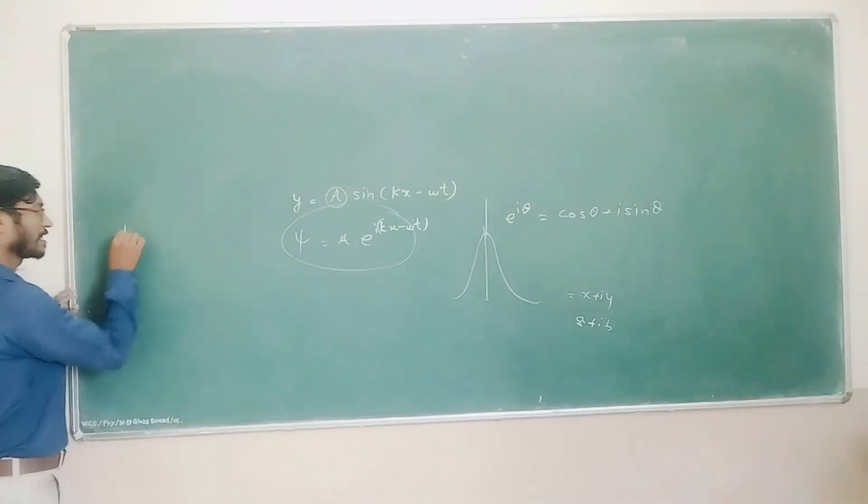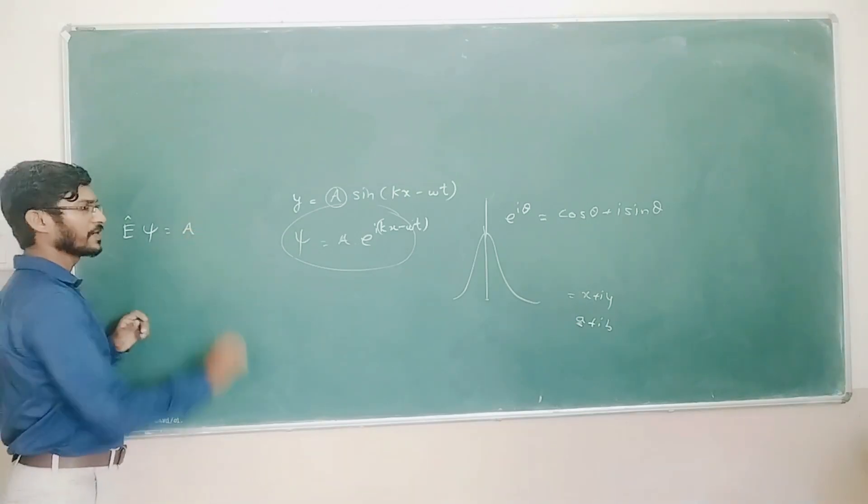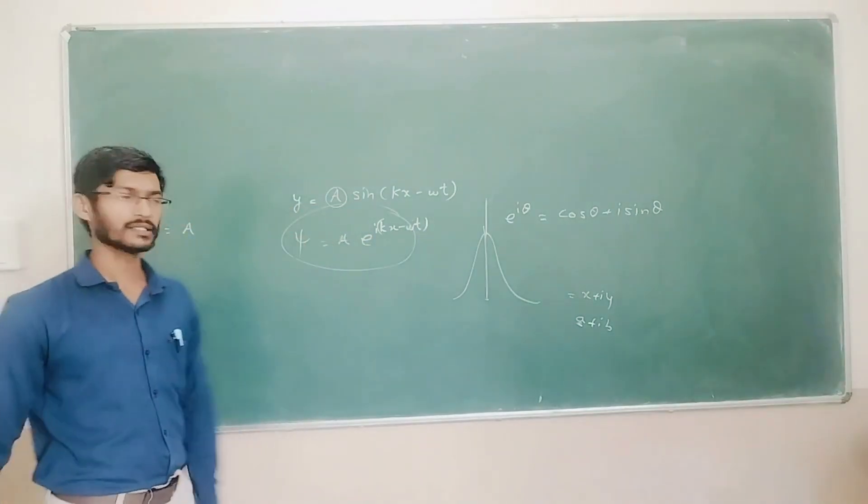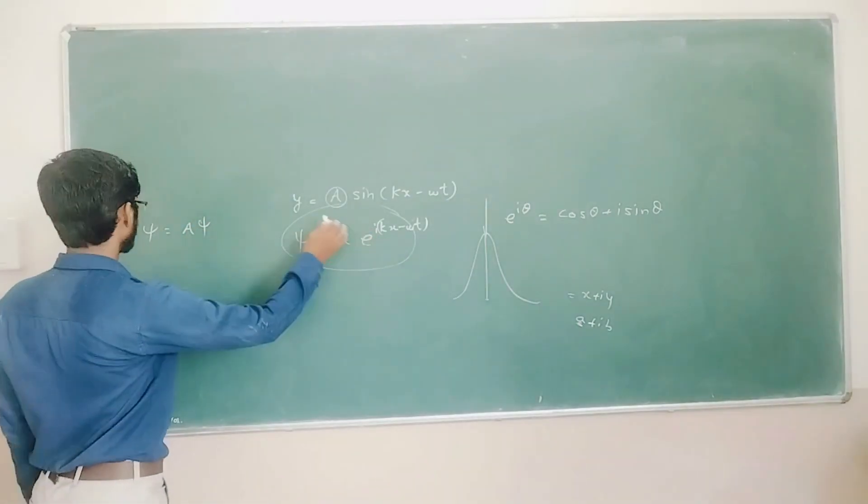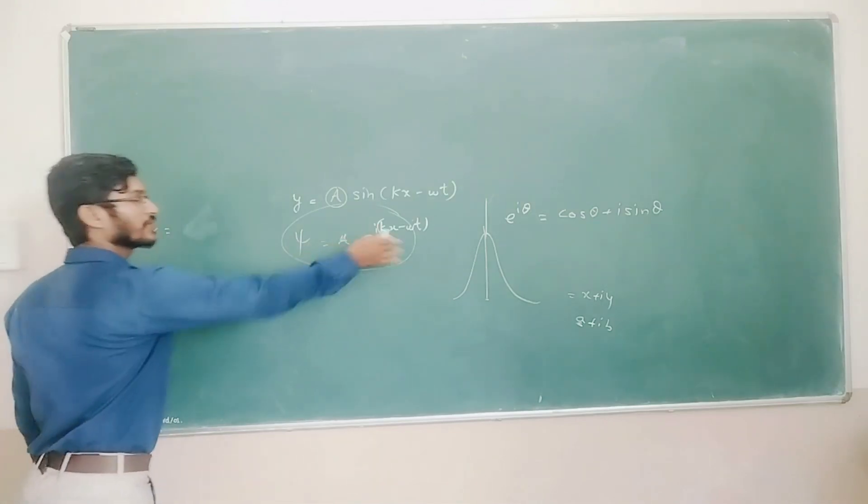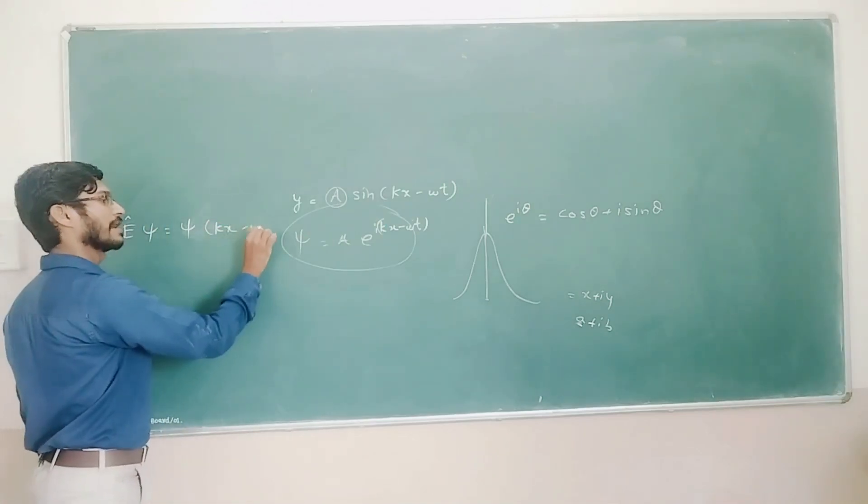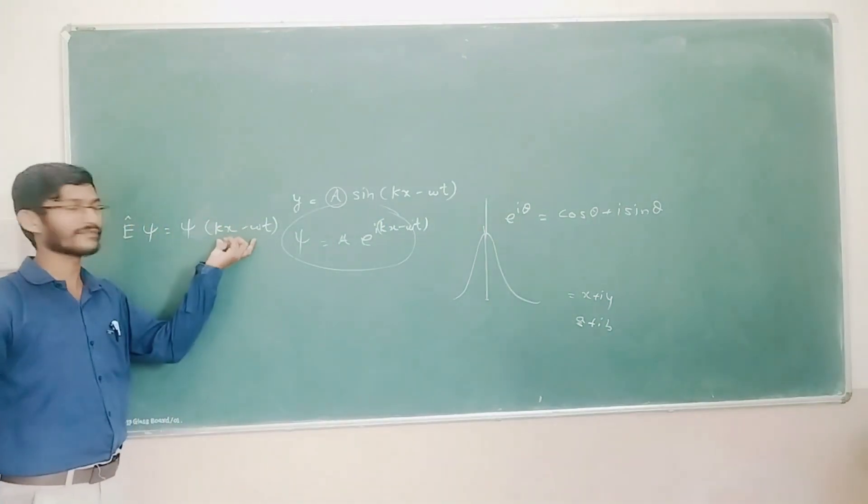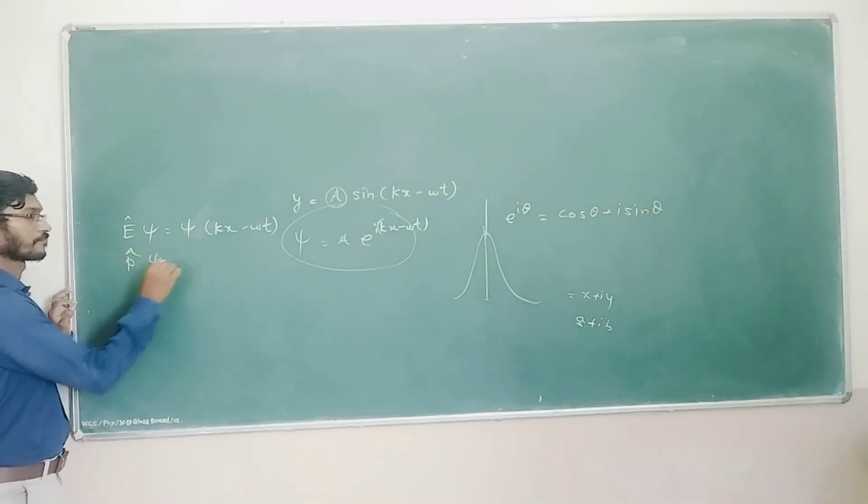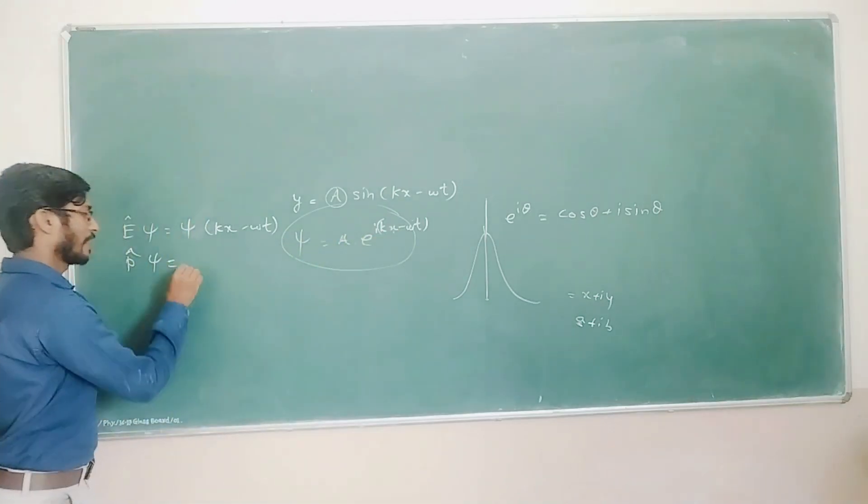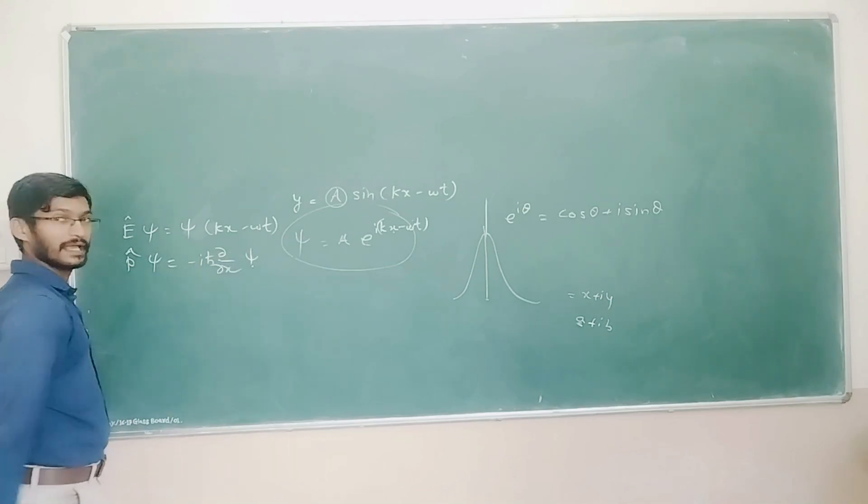If I use total energy operator, my operator, this will become A into e to the ikx - I will write psi as it is. This point itself is psi. So the remaining point will be kx minus ωt. So this is the eigenvalue of momentum. Momentum operator is minus iℏ d/dx because this is in one dimension, and operate this on the psi and find out the value.